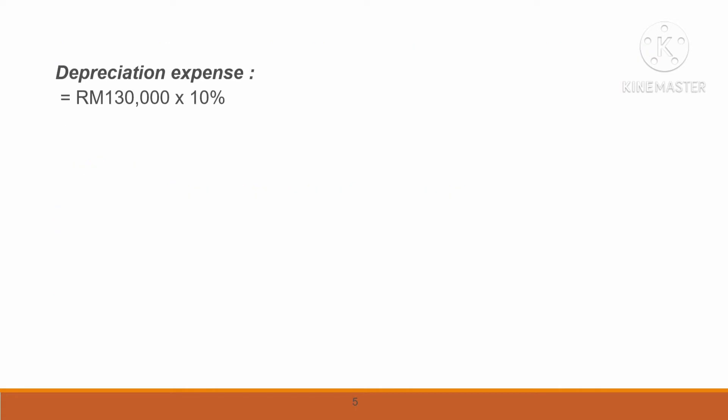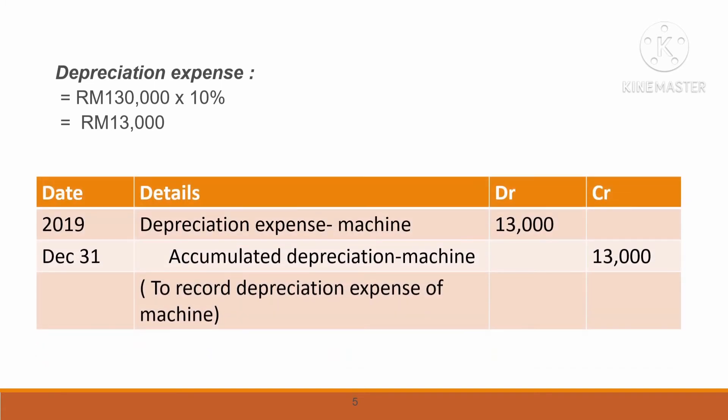To calculate depreciation expense, we use cost less accumulated depreciation. But for the first year, there is no accumulated depreciation carried from the previous year. The depreciation is RM13,000. The adjusted entry is: debit depreciation expense, credit accumulated depreciation of the machine, RM13,000.